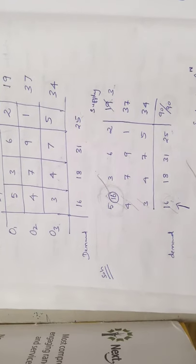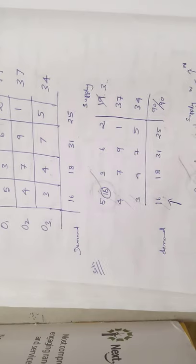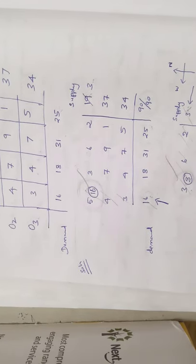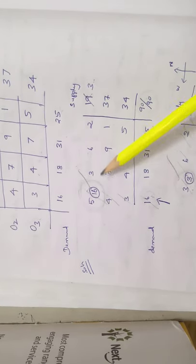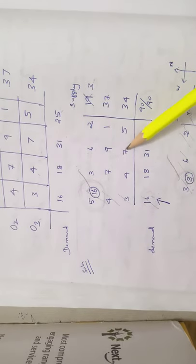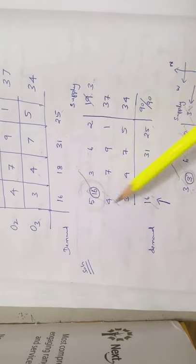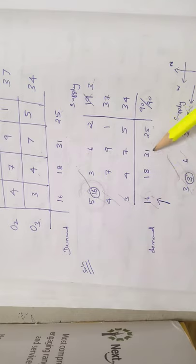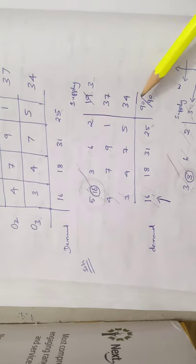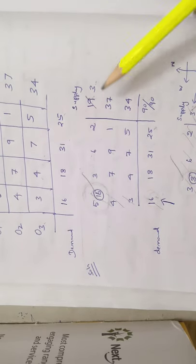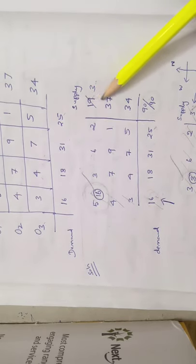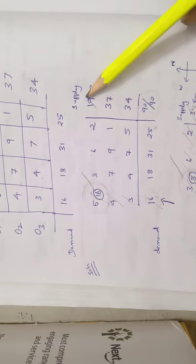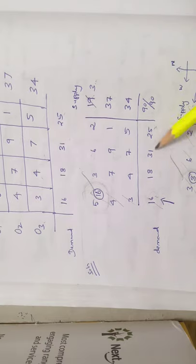To compute the initial basic feasible solution, rewrite the problem. Cost values: 5, 3, 6, 2, 4, 7, 9, 1, 3, 4, 7, 5. Supply: 19, 37, 34. Demand: 16, 18, 31, and 25. The total supply is 90 and total demand is 90.